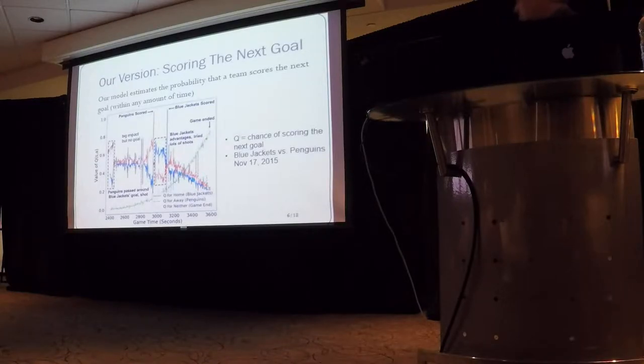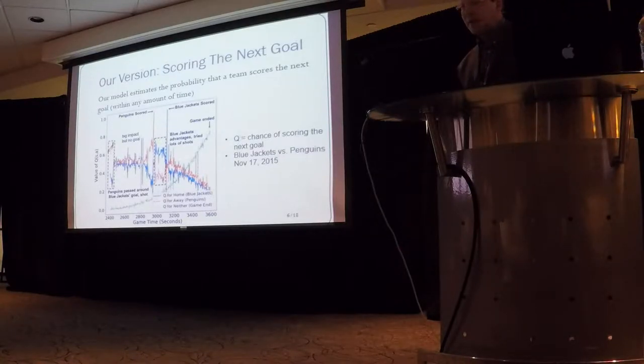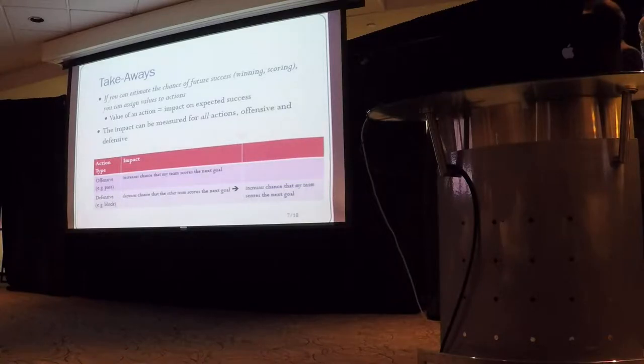And then, when you, and similar to Pettigrew, once you have this, the ability to estimate this, then you can look at the impact of an action. So you can say, okay, this didn't lead to a goal, but it increased their scoring chances. So that's why I say, the big takeaway to me is, if you can estimate the chance of future success, that could be defined in different ways, but let's say winning or scoring the next goals, then you can assign values to actions.